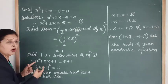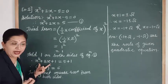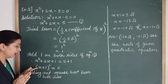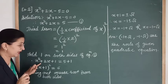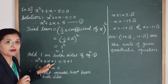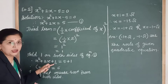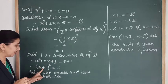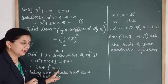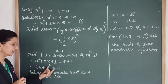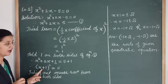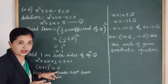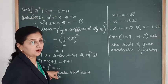Now we identify which perfect square bracket this LHS represents. The square root of x² is x; the sign of the middle term is positive, so we use plus; and the square root of the third term 1 is 1. So the LHS is the expansion of (x + 1)². The RHS is 5 + 1 = 6. Taking the square root from both sides: x + 1 = ±√6, since 6 is a non-perfect square number.